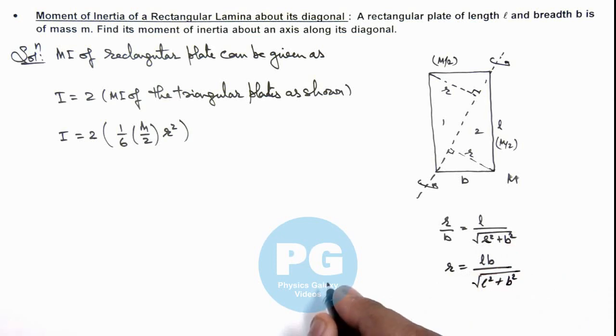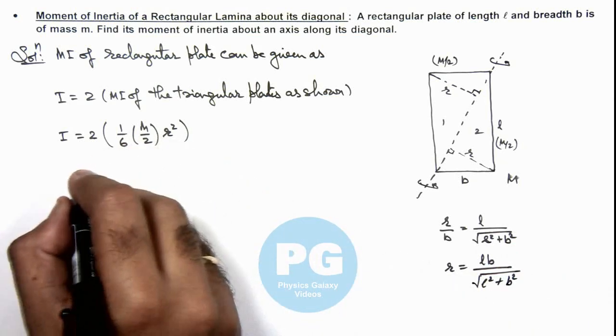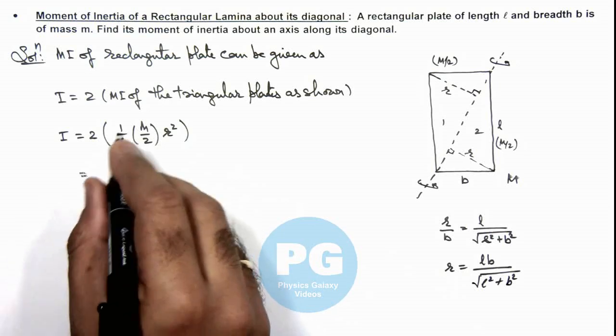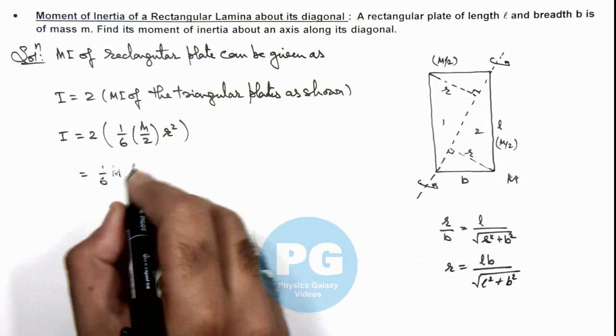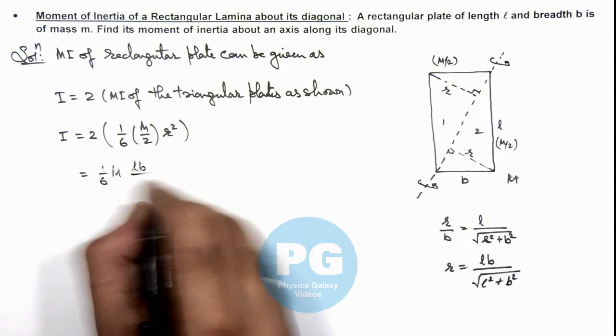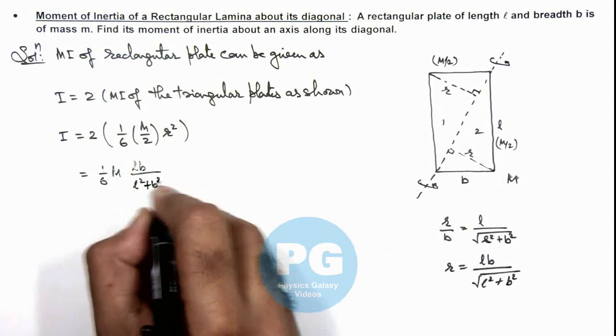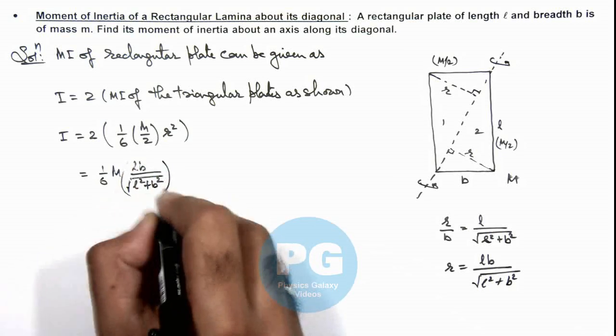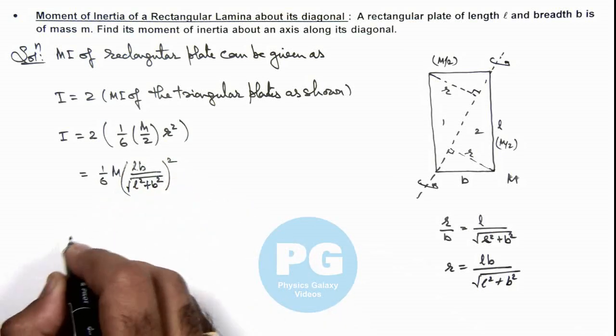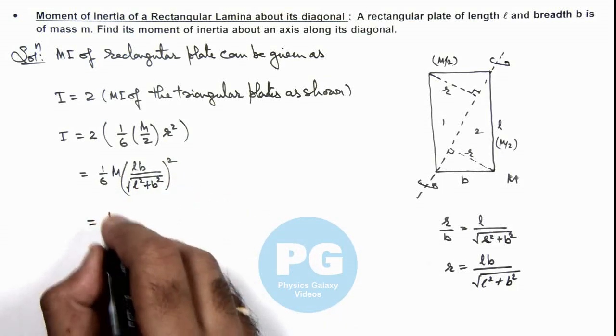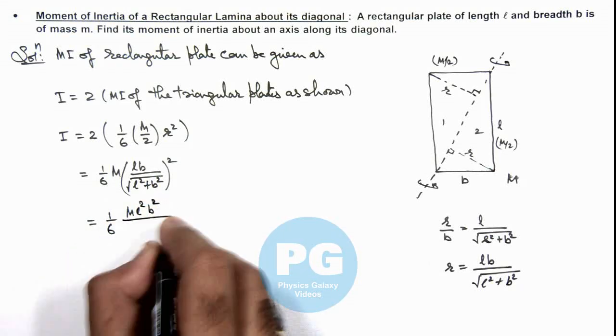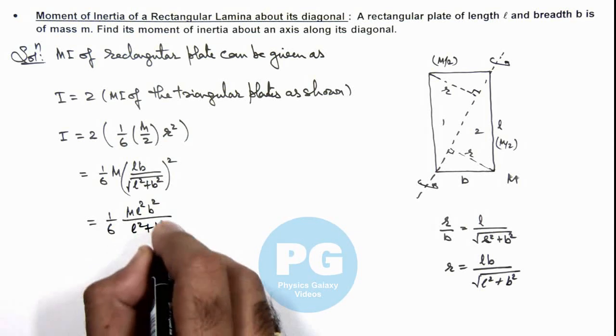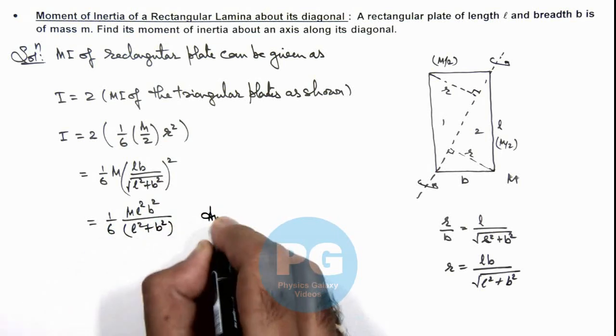So in this situation if we substitute the value of r, this is giving us 1 by 6, m, and r square is l b upon l square plus b square. So this is giving us 1 by 6, m l square b square divided by l square plus b square. That is the result of this problem.